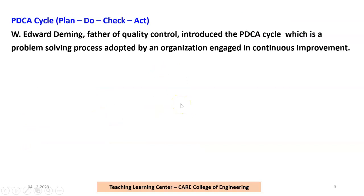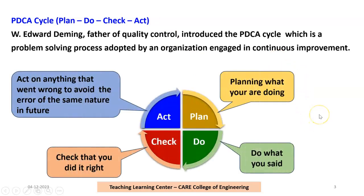In the Total Quality Management subject, we have studied one concept called the PDCA cycle — how to improve the quality of anything. The main methodology is the PDCA cycle: Plan, Do, Check, Act. It was proposed by Edward Deming, who is known as the father of quality control. He introduced the PDCA cycle, which is the problem-solving process adopted by an organization engaged in continuous improvement.